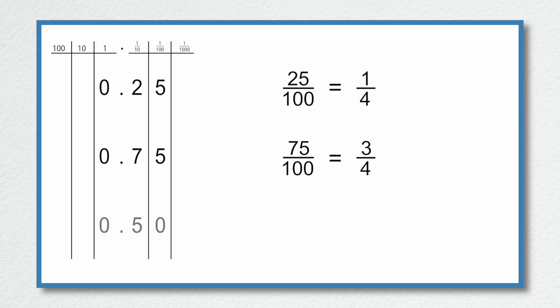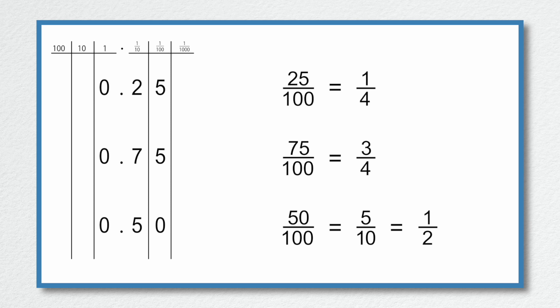If we had 0.50, that would be 50 over 100. But 0.50 is also 5 tenths, so 50 over 100 equals 5 tenths, which we know simplifies to a half. So we have three equivalent fractions — 50 hundredths, 5 tenths, and a half — all equivalent because the denominator is twice the numerator. Be alert that 0.50 is the same as 0.5, which is equal to 50 over 100, or 5 over 10, which is equal to a half.